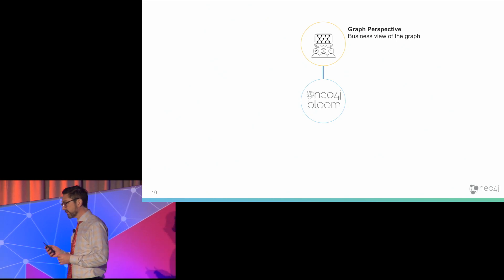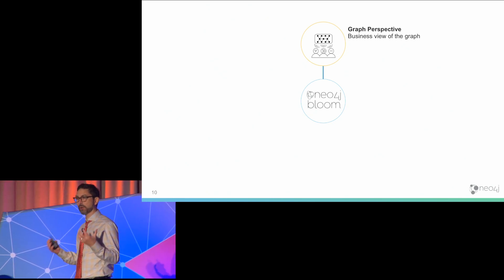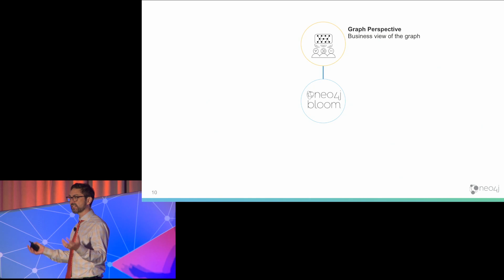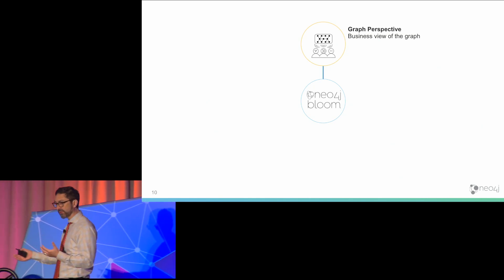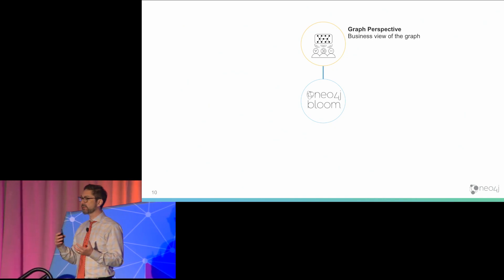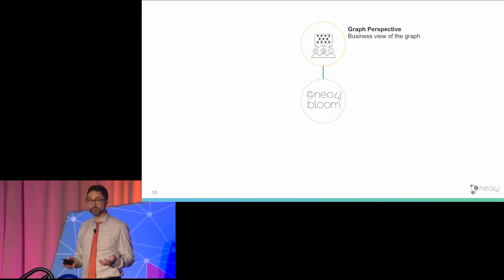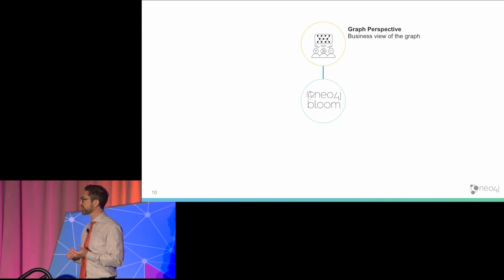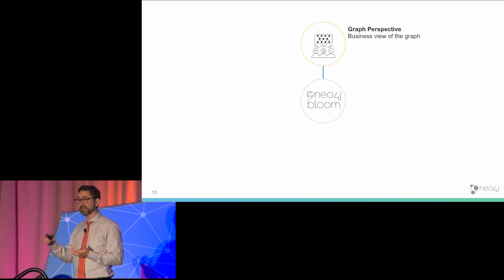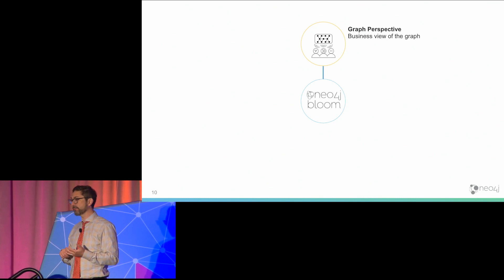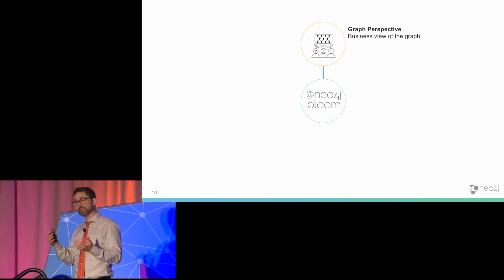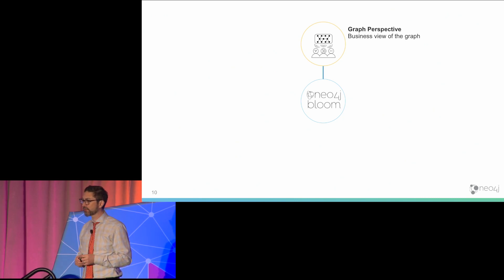As far as the feature set in the Neo4j Bloom 1.0 release: we started, because we're still a database company — that's our DNA — the first thing we thought about when building a graph visualization tool is what the data model actually looks like. Sure, the data model is the Neo4j property graph, but if we want to make the Neo4j property graph available to everyday users, they don't necessarily know what labels are or what the relationship types are.